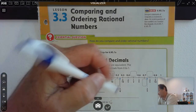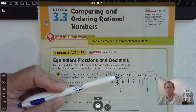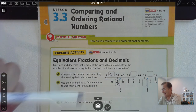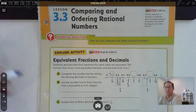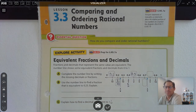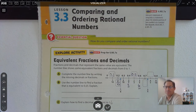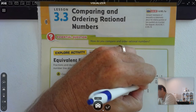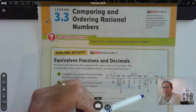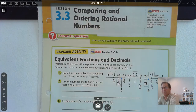0.2 is read as 2 tenths. We notice that 1 fourth is in between, so that would be 0.25. 3 tenths is 0.3. 0.4 is read as 4 tenths, or reduces to 2 fifths. 1 half we would write as 5 tenths. 6 tenths or 3 fifths. 7 tenths, and 3 fourths would be in between 7 and 8 tenths, and that would be read as 0.75.